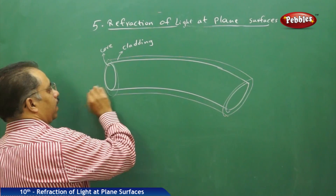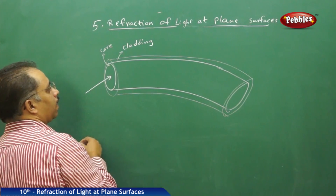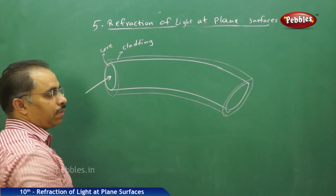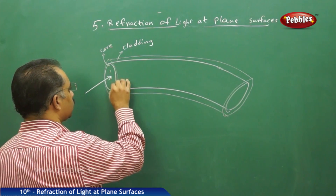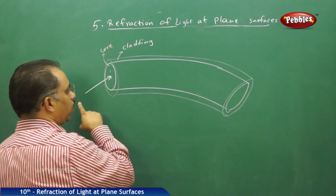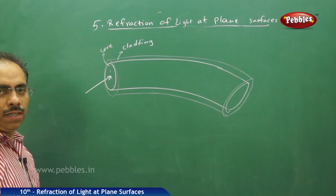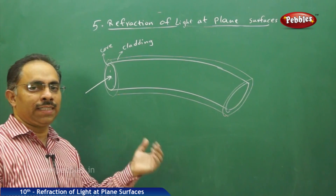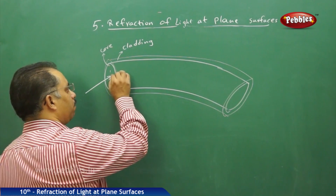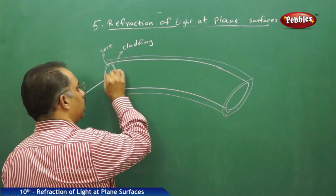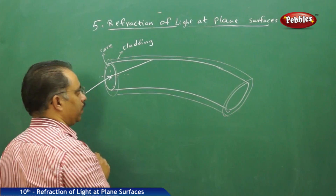The light ray is incident at a particular angle on the cross section of the fiber. Once it is crossing into the boundary, it is going from air into the fiber medium. Since the fiber medium is optically denser compared to air, it will bend towards the normal and travel this way.